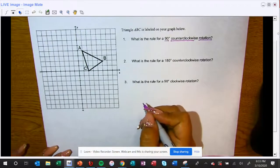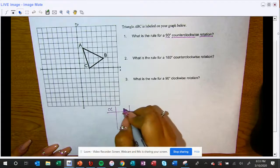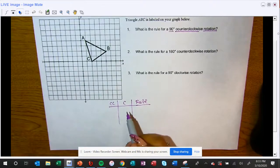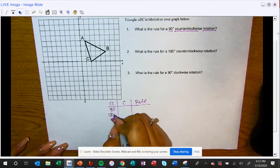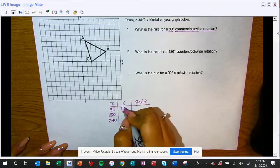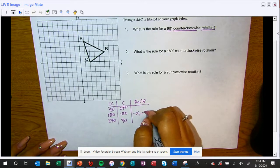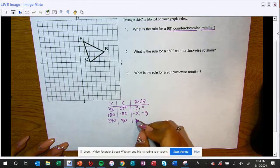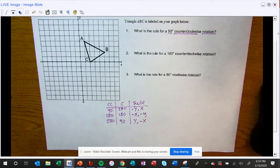In class we talked about the anchor chart that we have labeled rotations. That chart looks like this: it says CC, C, and rule. CC stands for counterclockwise, C stands for clockwise, and then here's the rule. We filled this in: 90, 180, 270. The rule in the middle was negative X comma negative Y. This rule here the Y is negative and it switches, and then here it switches again but now the X is negative. This is all I need to answer all three of these problems.